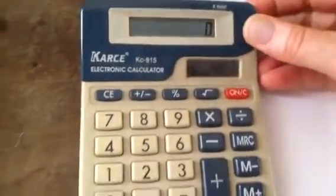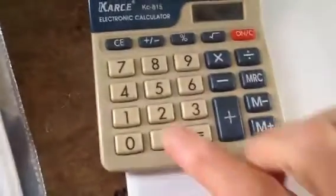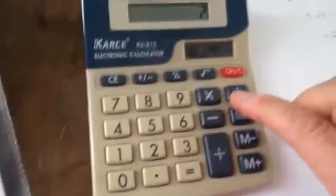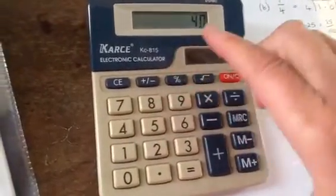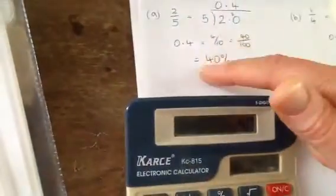Right, here's our calculator, so we divided 2 by 5. We're going 2 divided by 5, and we want a percent. 40%, there's our answer.